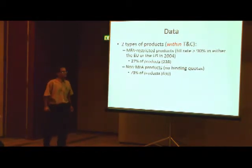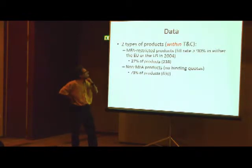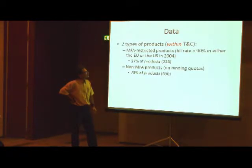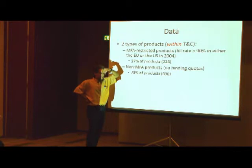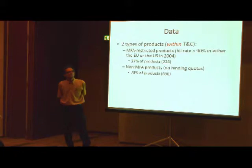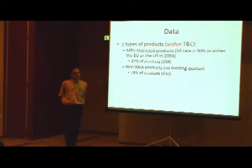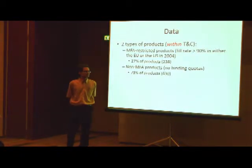How many of those are hitting both? Because if you're 50% in the EU and 90% in the US, it's not clear how to classify it. It's a good question — I don't know the number. Actually, one approach used in the literature has about 130 products that are restricted and subject to binding quotas in the US but not in the EU. That's what they use to identify the effects.